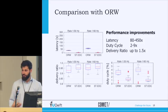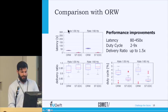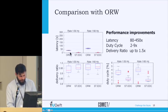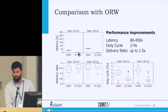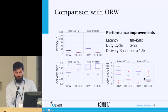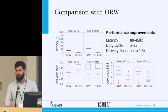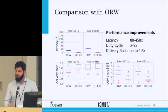This first comparison is with ORW as implemented in TinyOS. We have different data rates and three metrics: latency, delivery ratio, and duty cycle. Each box compares without Stafetta and with Stafetta. We see drastic improvements across all three metrics. In latency, we improve from 80 to 450 times, while we reduce the duty cycle from 2 to 9 times. The delivery ratio is also better, though more comparable.